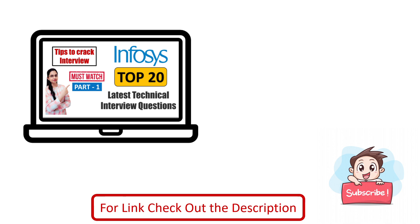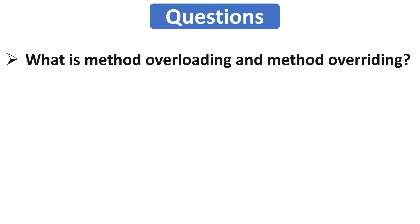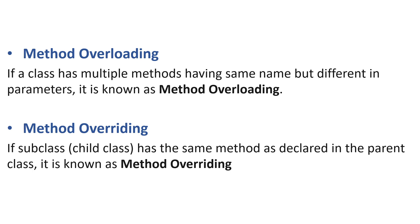The link for that video is in the description box. Our first question is: what is method overloading and method overriding? This is a very important question from the object-oriented programming concept in Java. Method overloading and method overriding are two ways to achieve polymorphism in Java. If a class has multiple methods with the same name but different parameters, it is called method overloading. If a class has the same method as declared in the parent class, it is called method overriding. After giving these definitions, provide examples to explain them more precisely. Prepare these topics well, as interviewers often ask tricky questions based on these two concepts.